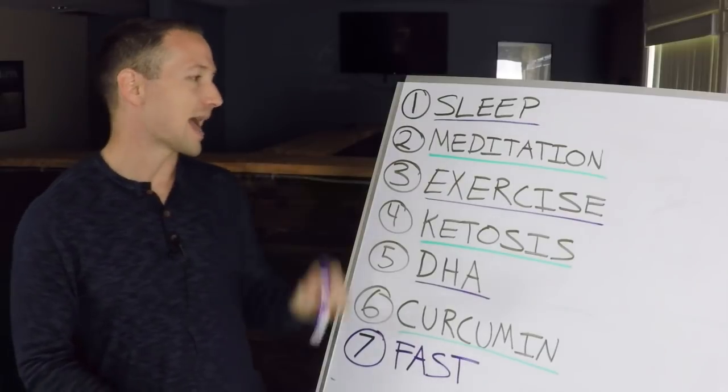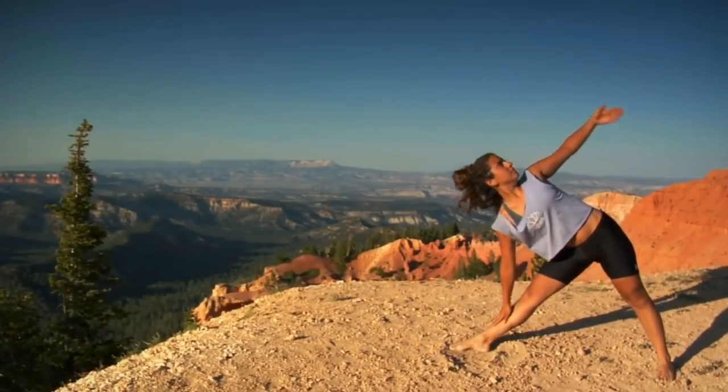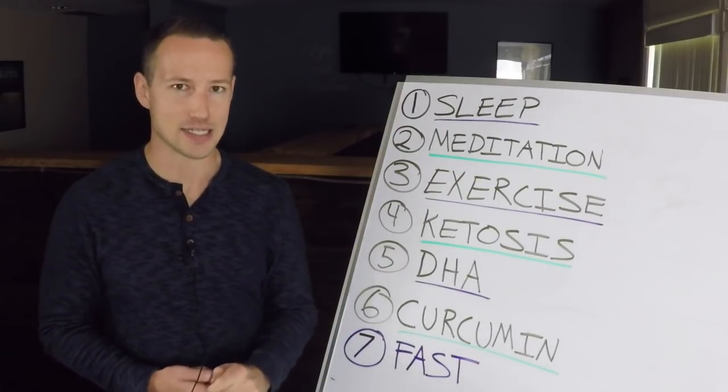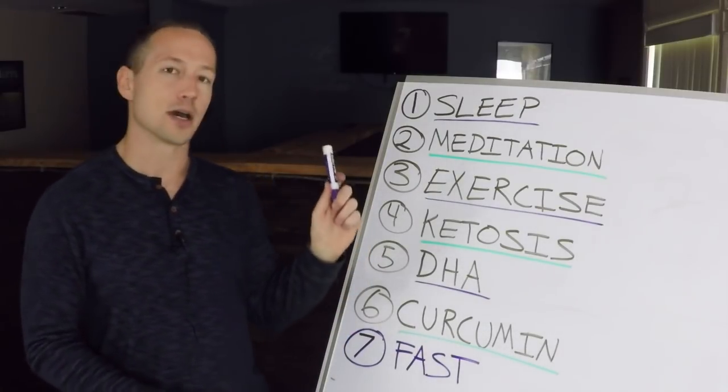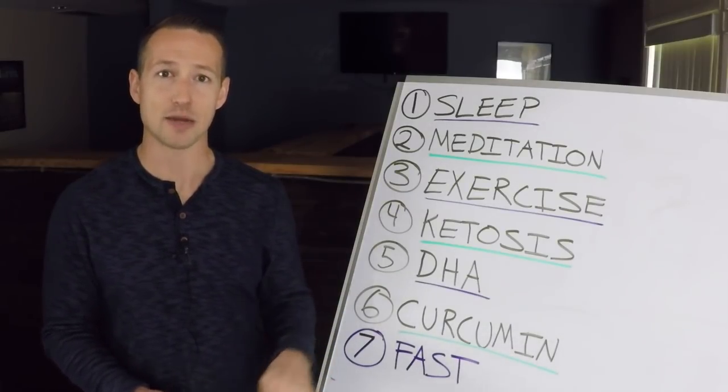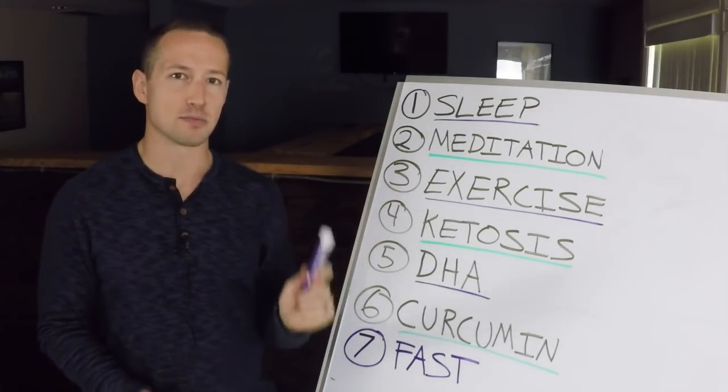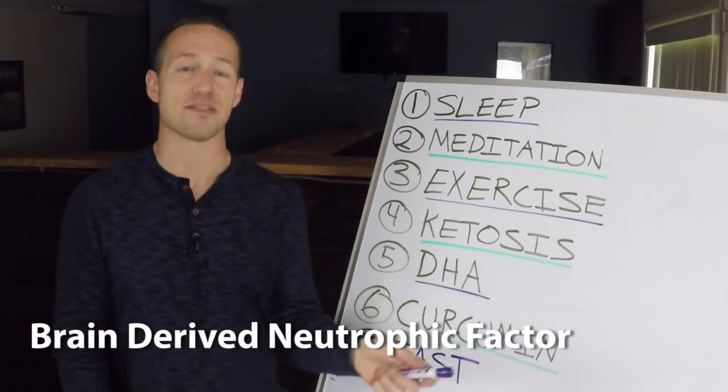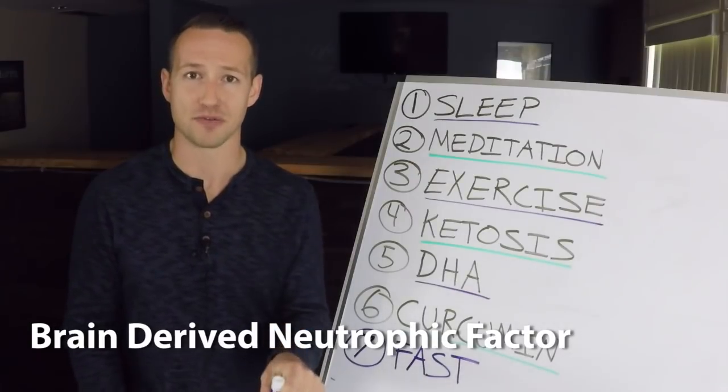Another one is going to be exercise. Now I want to preface with exercise, there's really two types of exercise that have been shown to increase your rate of neuroplasticity. One of them is going to be aerobic exercise. The other one is going to be high intensity exercise. And the main reason is that both of these, more aerobic than high intensity, have been shown to increase your production of what's called BDNF. It's called brain derived neurotrophic factor.